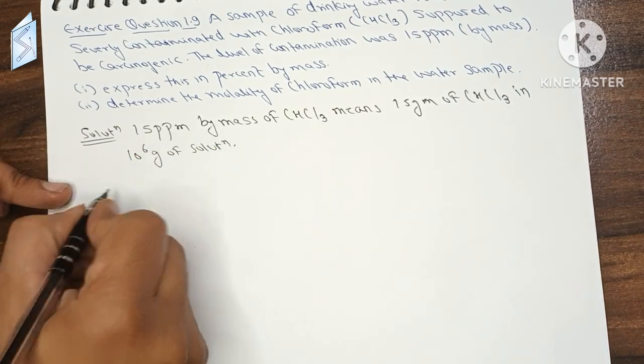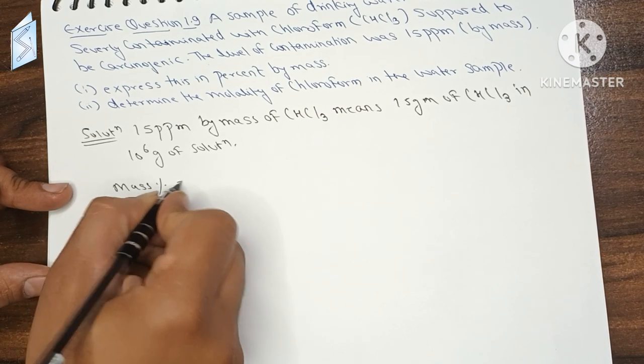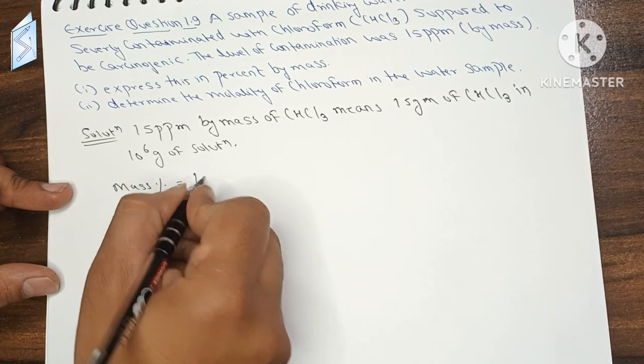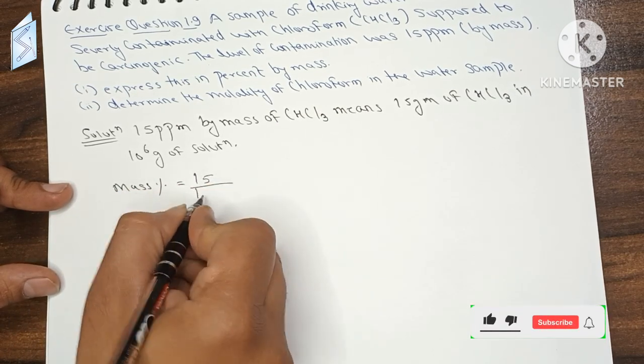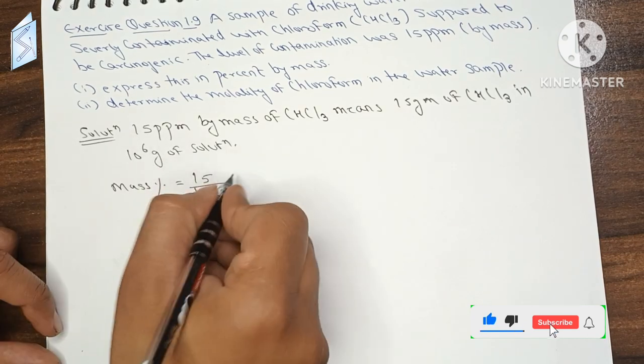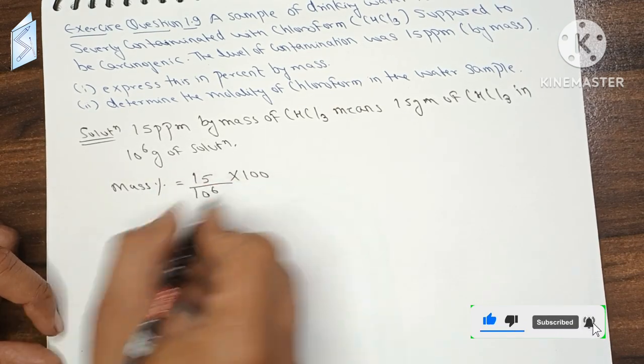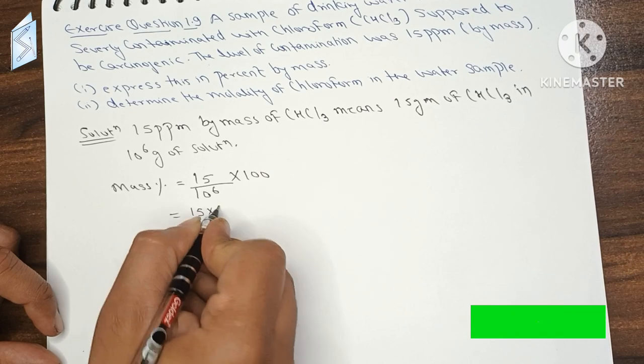So mass percentage will be mass of solute upon mass of solution into 100. This will be 15 into 10 to power minus 4.